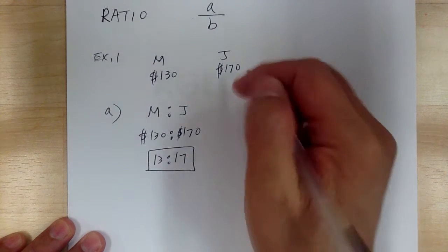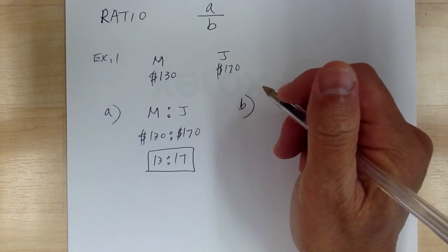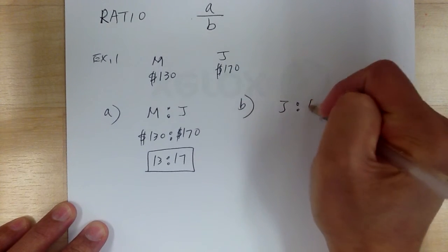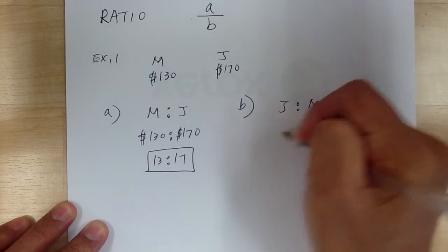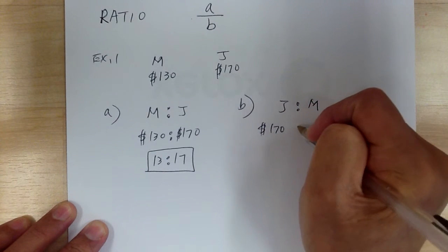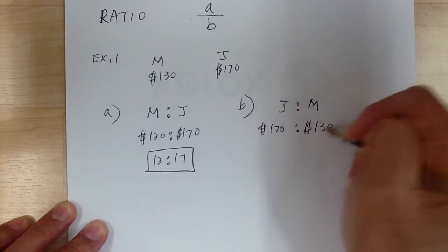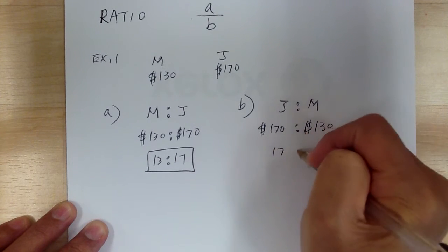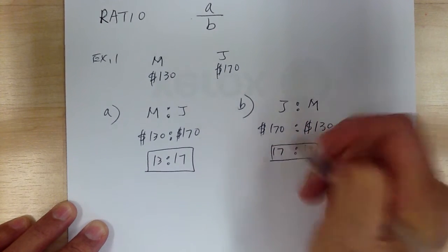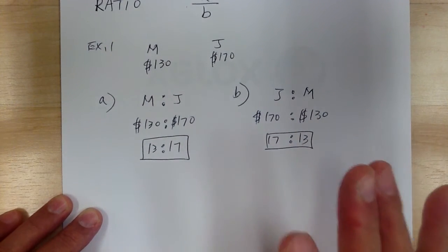Now for part B, you're looking for the ratio of Jen to Marcy. So the order gets switched. You reduce to get $17 to $13. For ratios, make sure you pay close attention to the order — you have to follow exactly what it says.